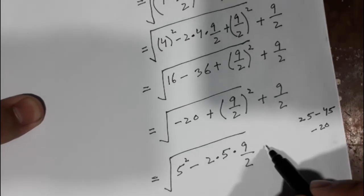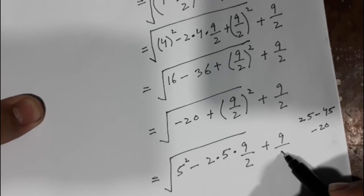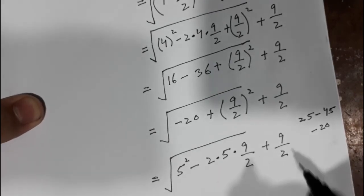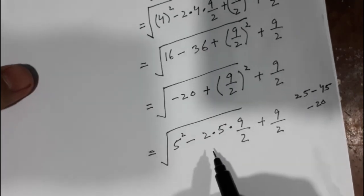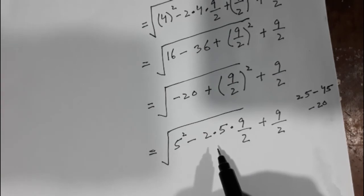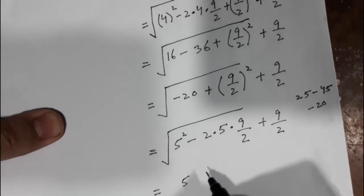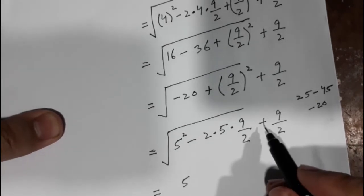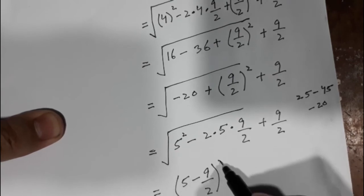So 9 divided by 2 is out of this square root. This is again the formula — a minus b whole square — where a is 5 and b is 9 divided by 2. So we have 5 minus 9 divided by 2, whole square.